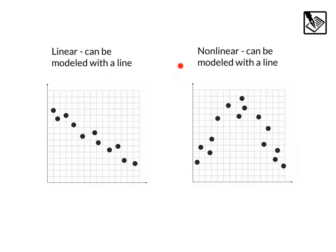Next up, linear and nonlinear. A linear association can be modeled with a line. For example, we have these points. If we draw a line kind of through them, we can see that line does a pretty good job of modeling the data.